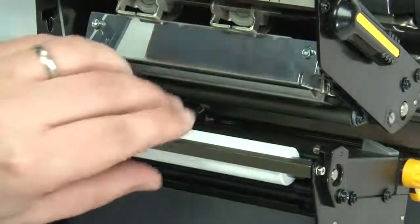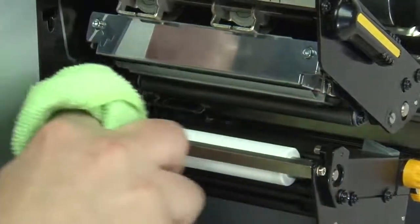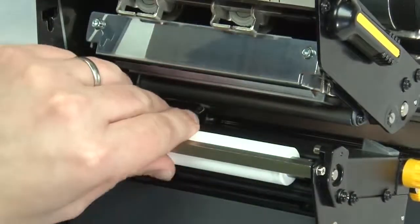To clean the platen roller, wipe with a lint-free cloth or swab dipped in 99.7% isopropyl alcohol. Allow the solvent to evaporate.